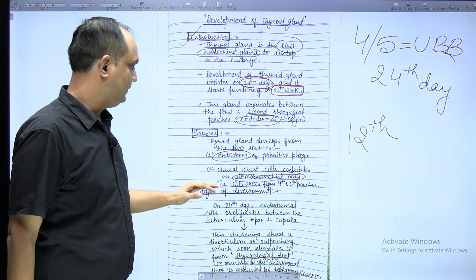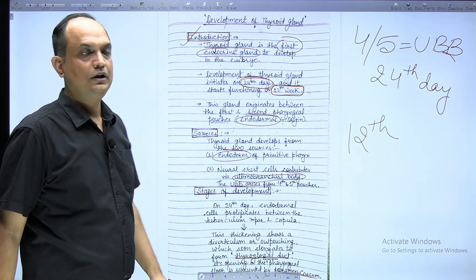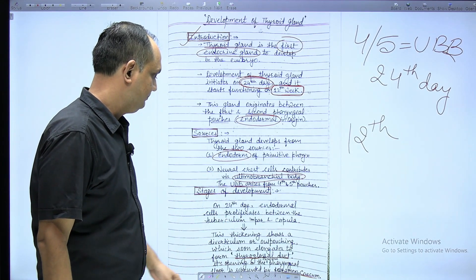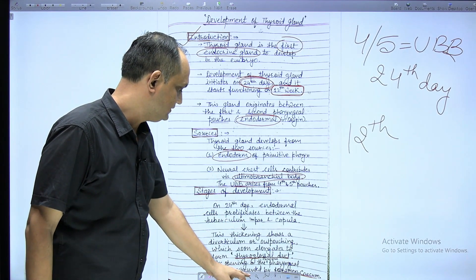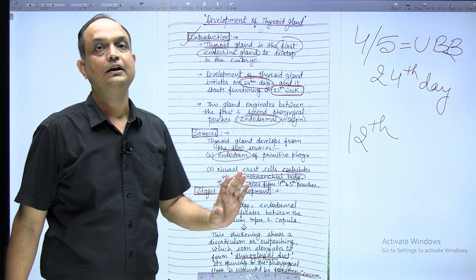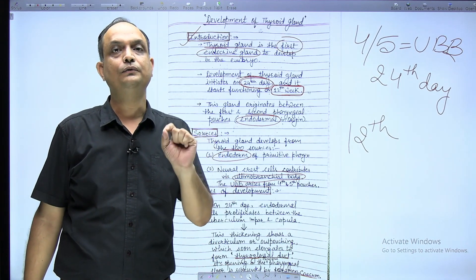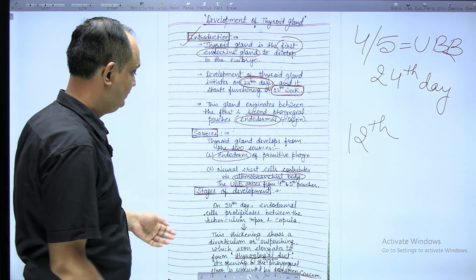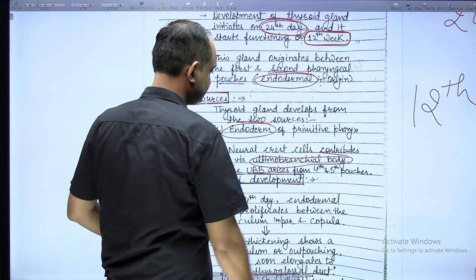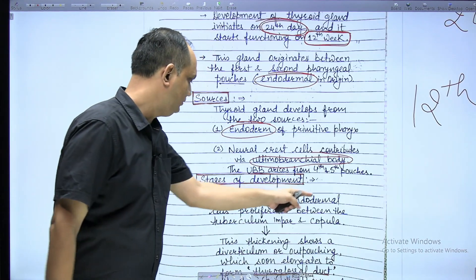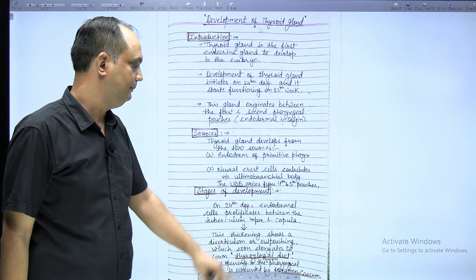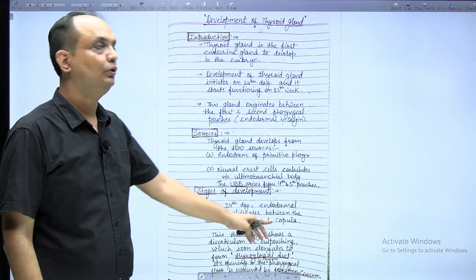We will now talk about the stages of development. The first stage is that on the 24th day of life, the endoderm cells proliferate between the tuberculum impar and copula.